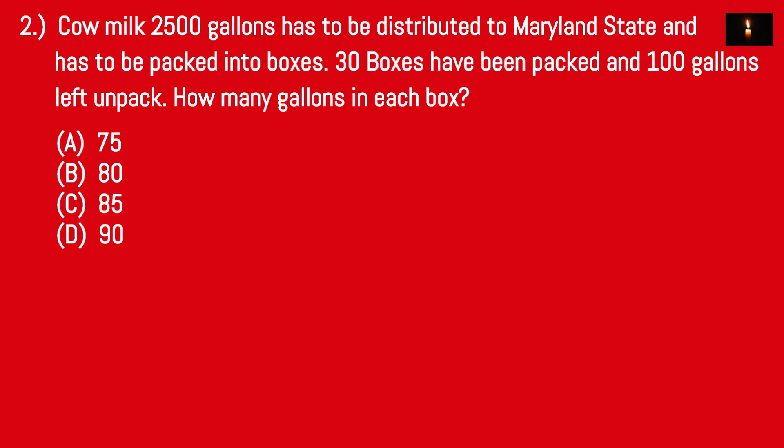Number 5 is 25. How many — 2,500 gallons has to be distributed to Maryland State. Maryland State has to be packed into boxes. How many gallons are in each box?